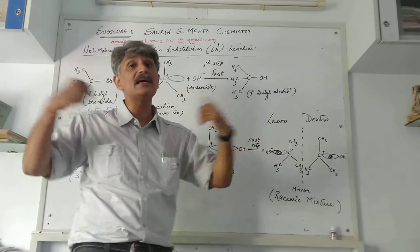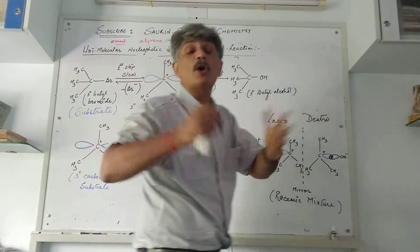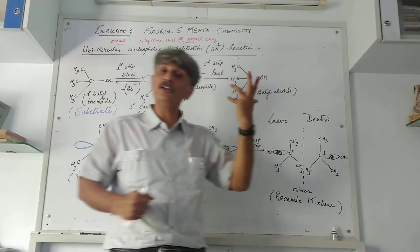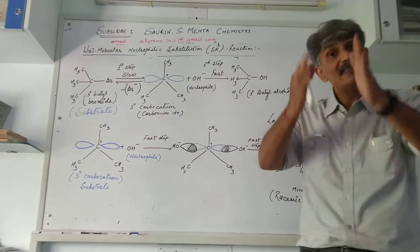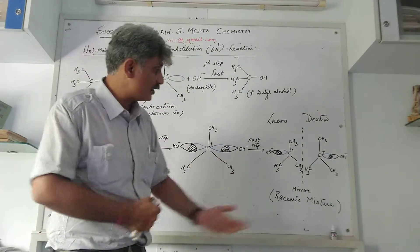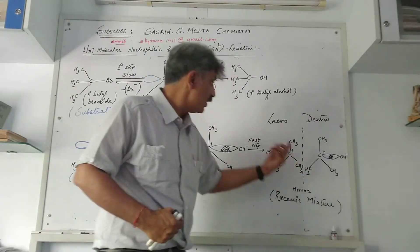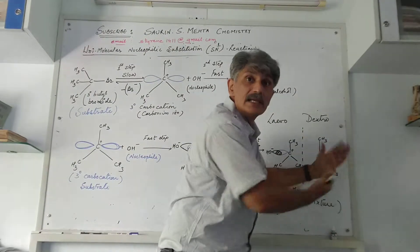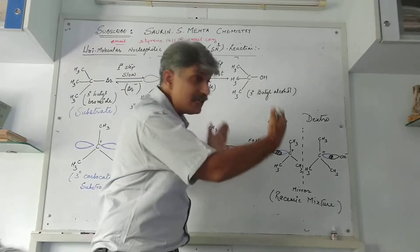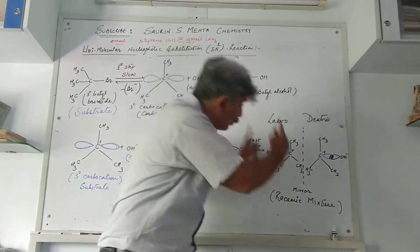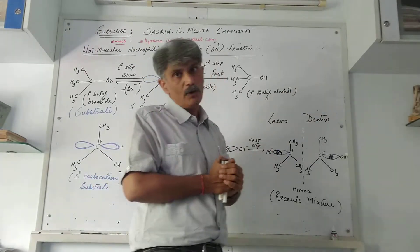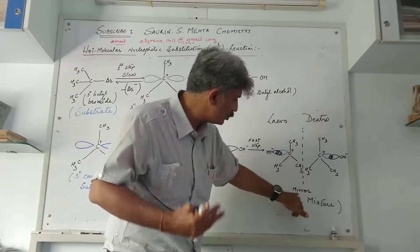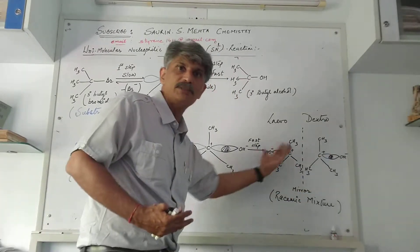When it attacks from front and rear side, you will have the probability of dextro and levo rotations - rotating the plane of polarization to right or left. This comprises formation of a racemic mixture. Equal proportions of levo and dextro forms are formed. I have shown you a mirror - this is the object, this is the image, both in equal proportions.